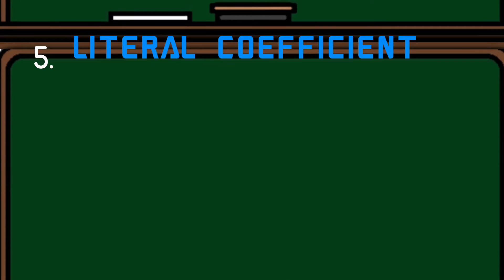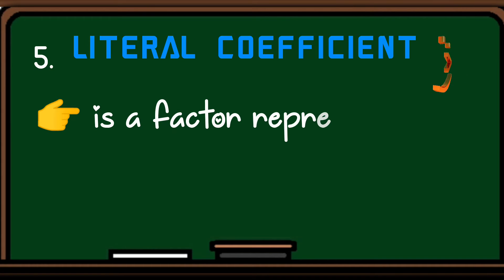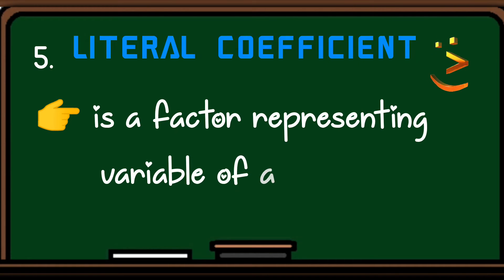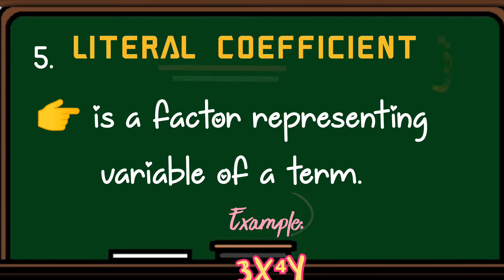Number five, literal coefficient. A literal coefficient is a factor representing a variable of a term. Example, in 3x to the fourth power y, x to the fourth power y is the literal coefficient. So, ibig sabihin, sinabi ng ang variable of a term, variable ang literal coefficient.